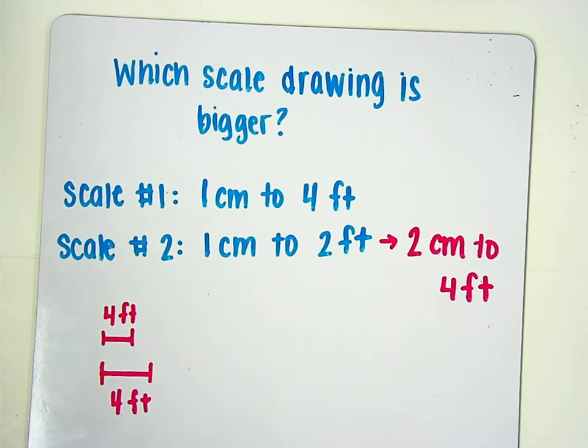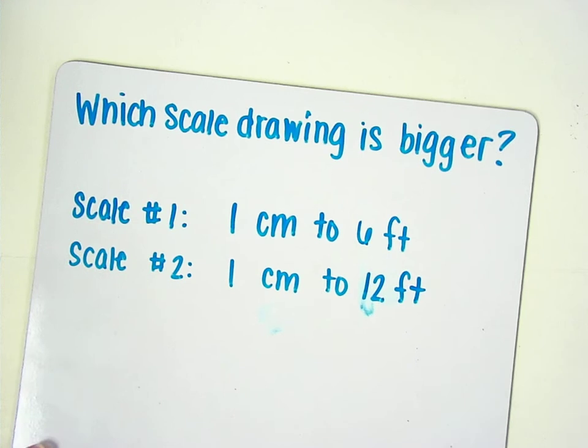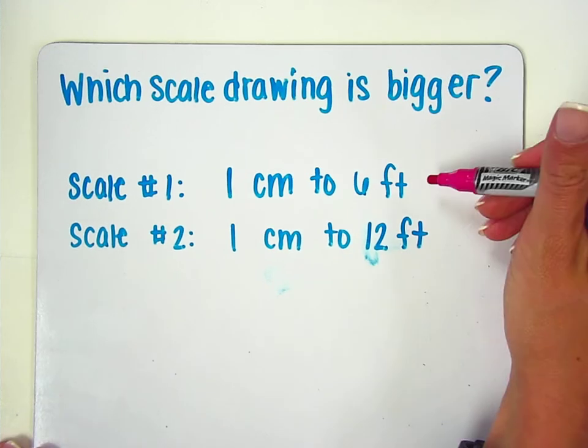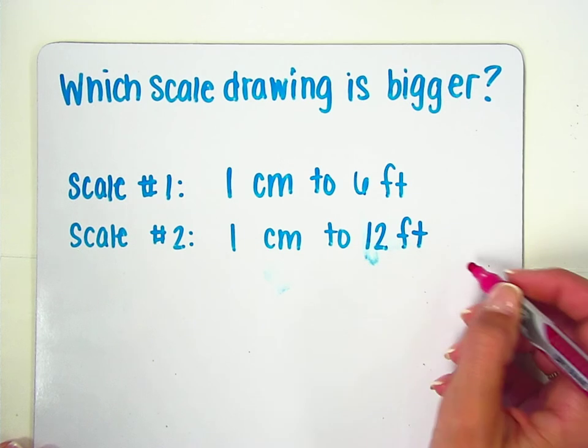We can also look at this in the reverse situation. So in this case which scale drawing is bigger? That first scale 1 centimeter to 6 feet or the 2nd scale 1 centimeter to 12 feet. So in this case we know that we need 1 centimeter to represent 6 feet. In that second scale drawing